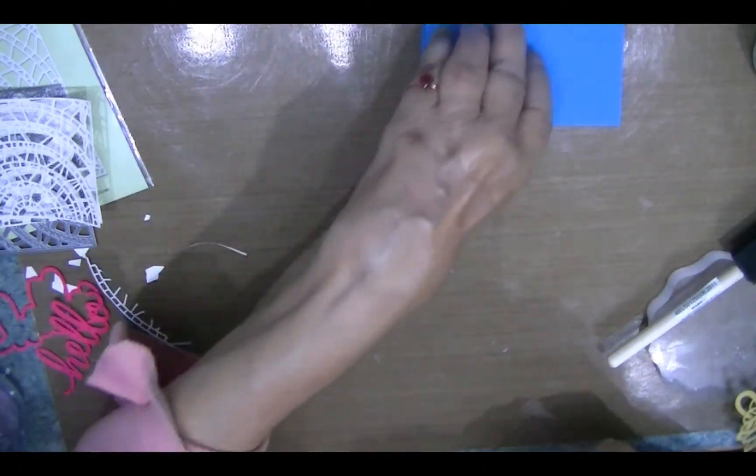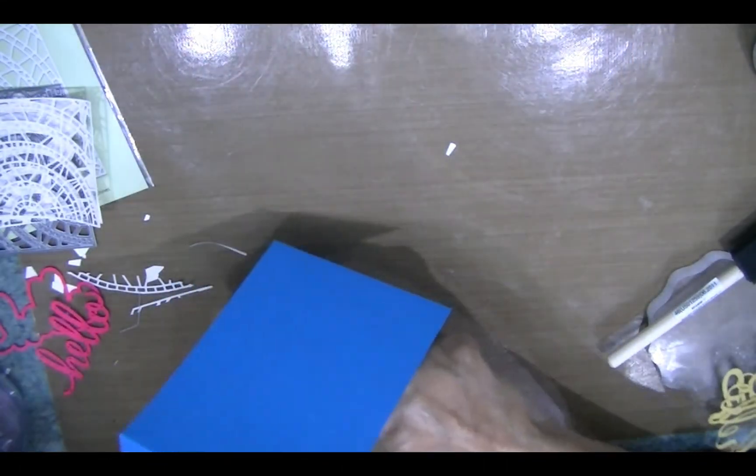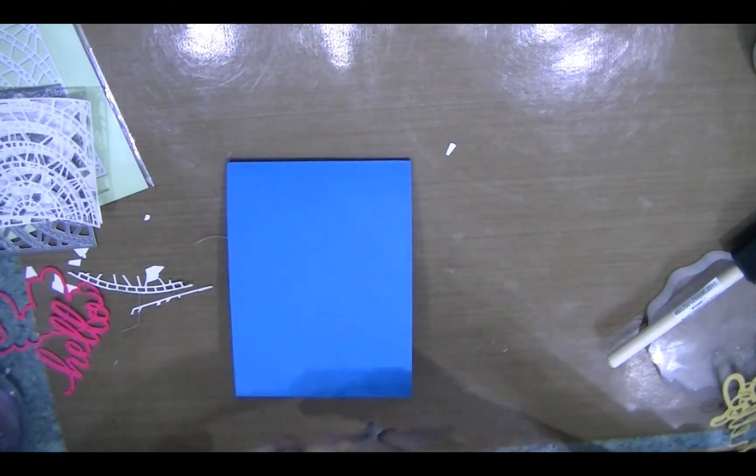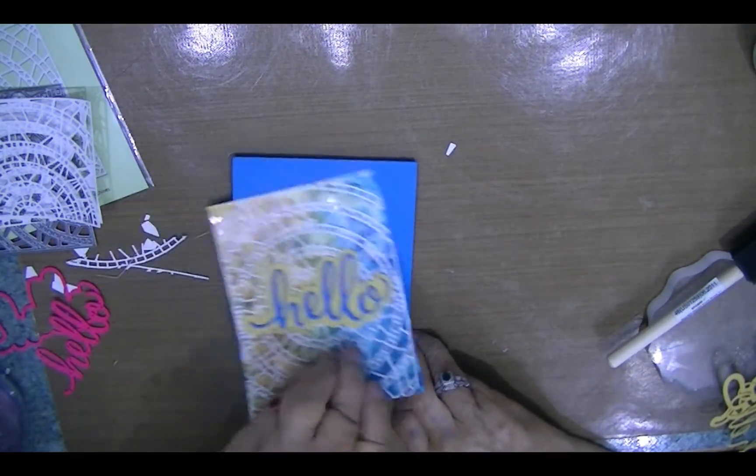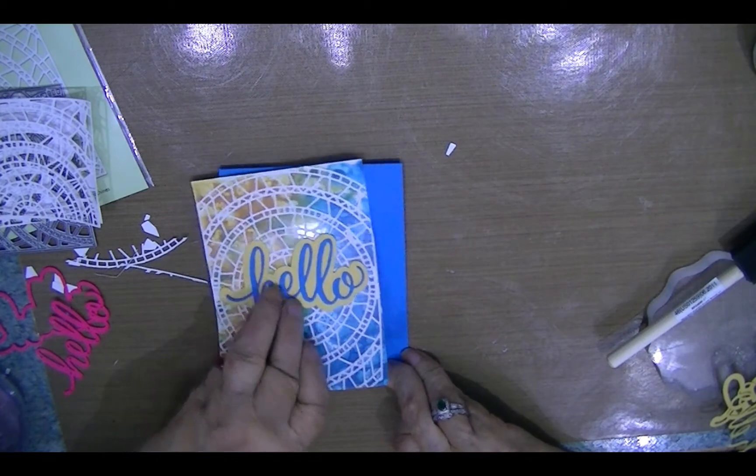Now, I have a card base cut 4.25 by 11, score it at 5.5, and I will glue this right here.